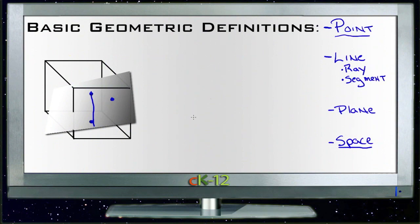There's your basic definitions. Point, line, ray and segment, which are parts of line or types of lines. A plane, which is an infinite number of lines. And then space, which is the three-dimensional area which each of these things can exist in.